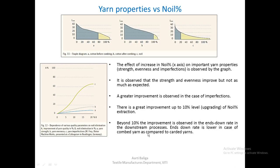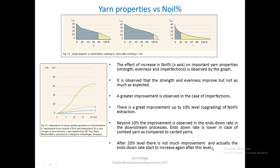Beyond 10 percent noil, if you increase the noil percentage, not much additional improvement is observed in strength, evenness, or imperfections. However, in downstream processes like warping or weaving, the performance of the yarn improves even after the 10 percent level. The ends-down rate is lower for combed yarn compared to carded yarn. After 20 percent noil level, there is not much improvement and the ends-down rate actually starts to increase again. So it is not useful to increase noil removal beyond 20 percent, and the highest practical level would be around 20 percent.